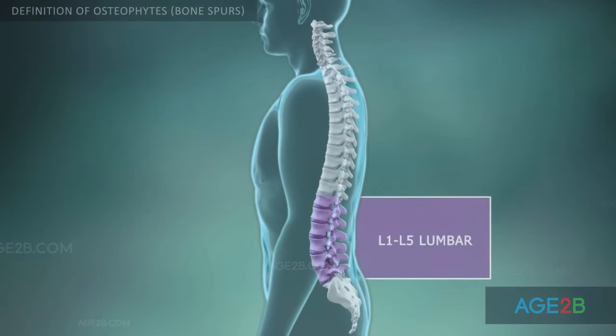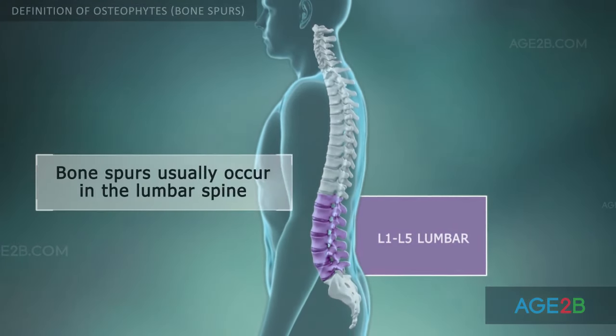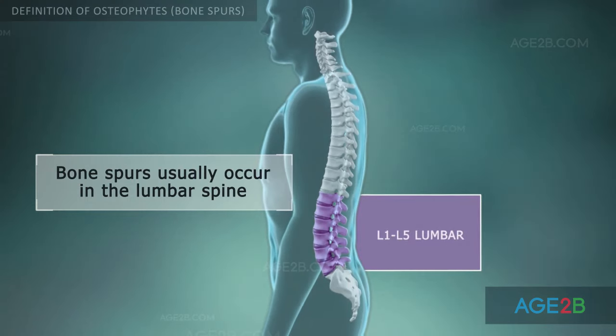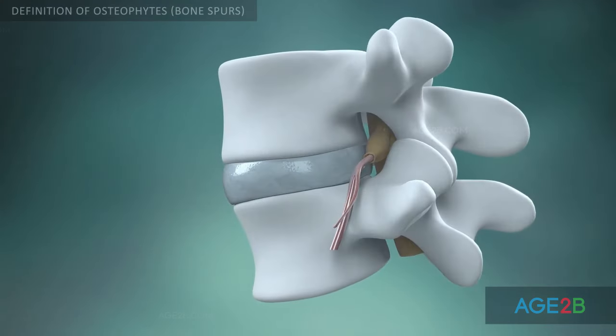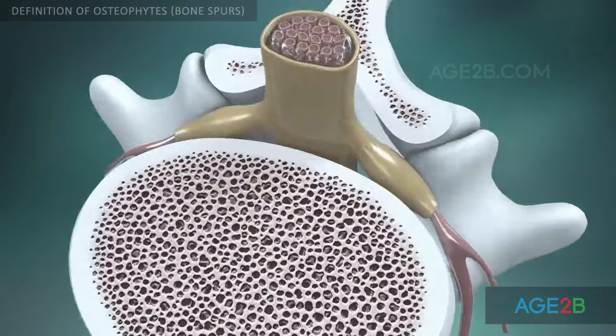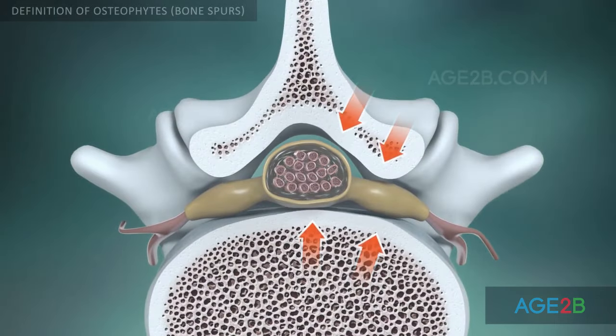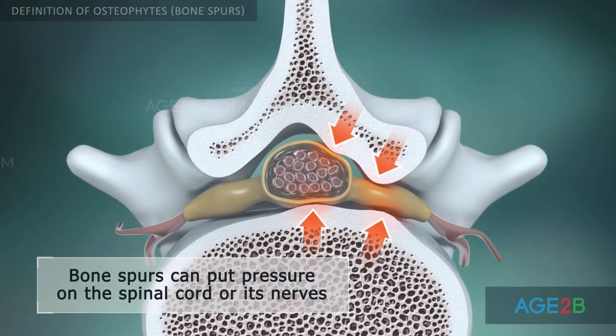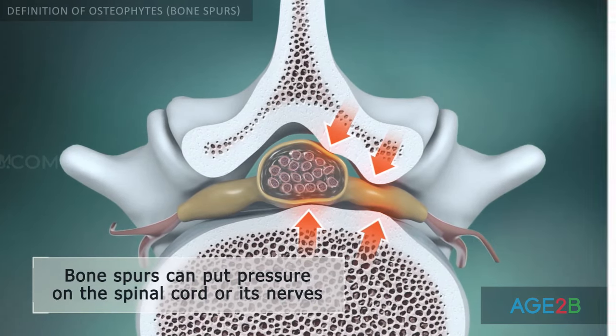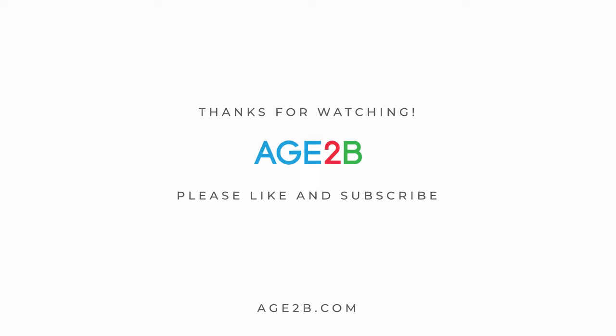Osteophytes are commonly seen in the lower back, also called the lumbar spine, but they can occur anywhere in the spine. Sometimes osteophytes are found in places where they can put pressure on the spinal cord or nerve roots.